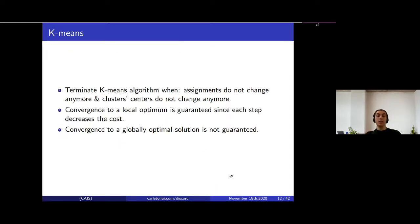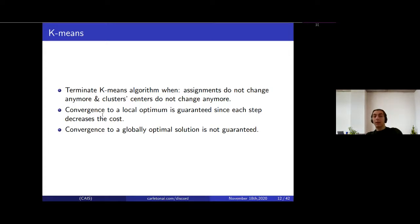K-means terminates when the assignments and cluster centers no longer change — z and mu cannot be updated further. K-means is guaranteed to converge to a local optimum, as each step decreases the cost function. However, convergence to a global optimum is not guaranteed.